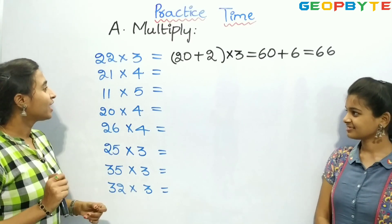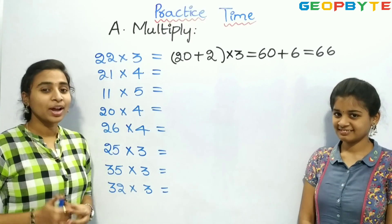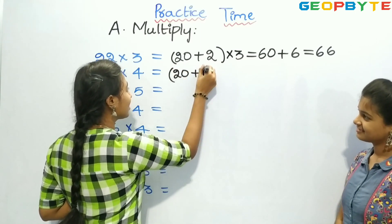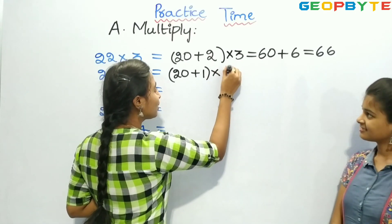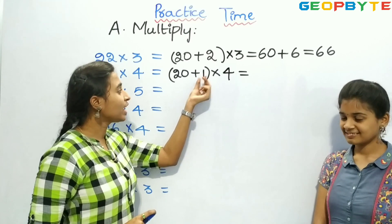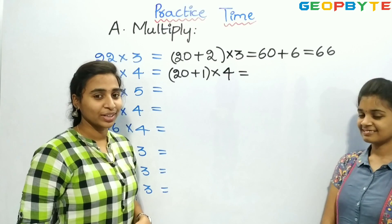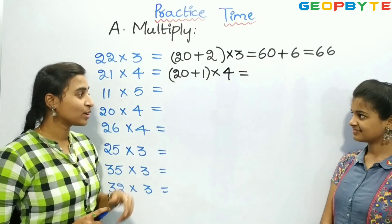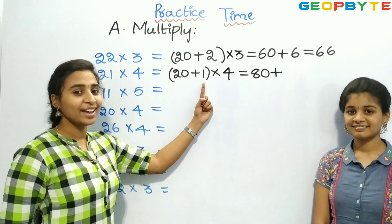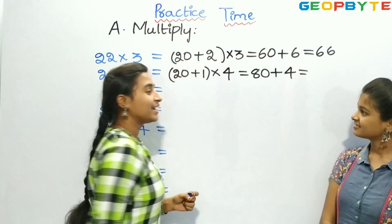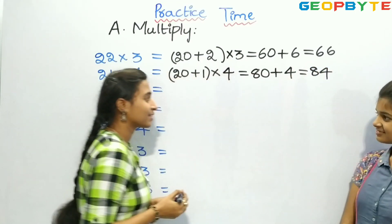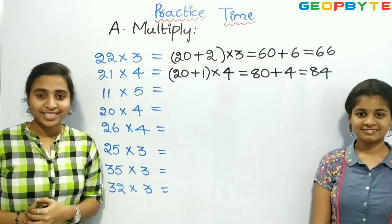Children, 21 is the bigger number. So let us split 21 as 20 plus 1, into 4. Now let us multiply 20 with 4 plus 1 with 4. First, let us multiply 20 with 4. 4 twos are 8, and we have a 0, so it is 80. Plus, 4 ones are 4. So 80 plus 4 is equal to 84. So children, 21 into 4 is equal to 84.